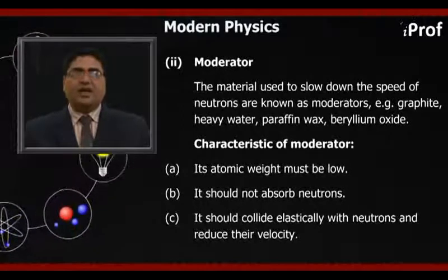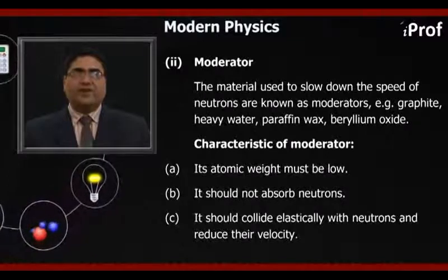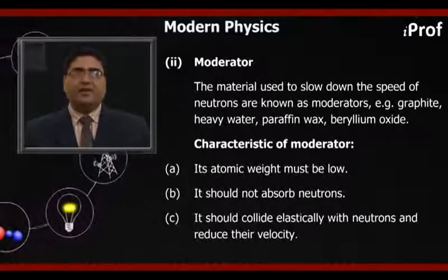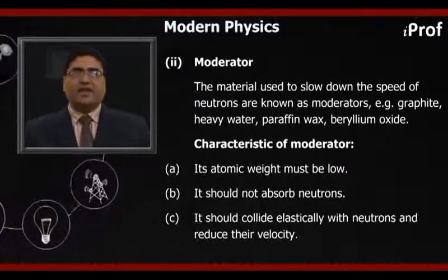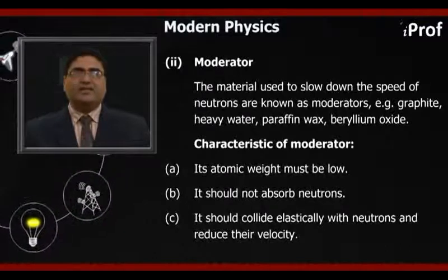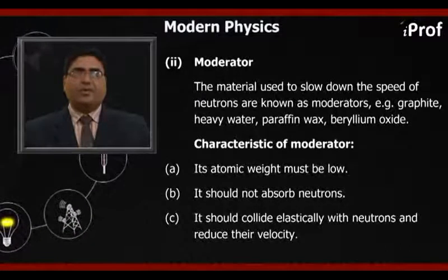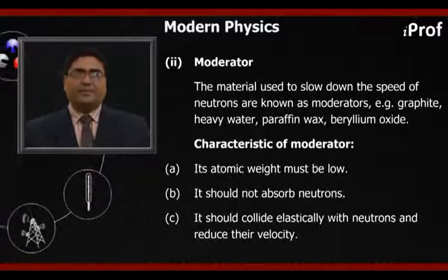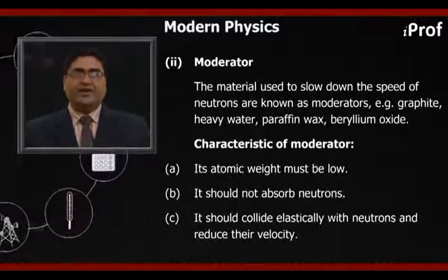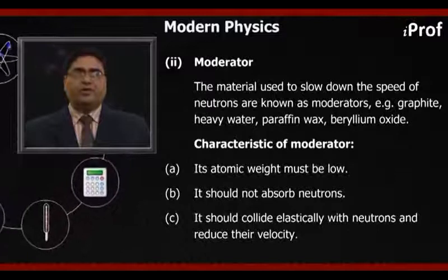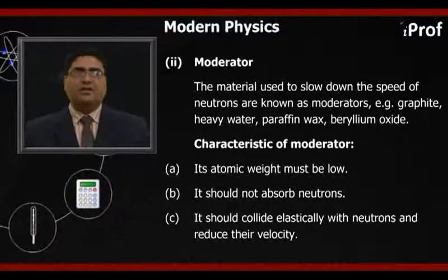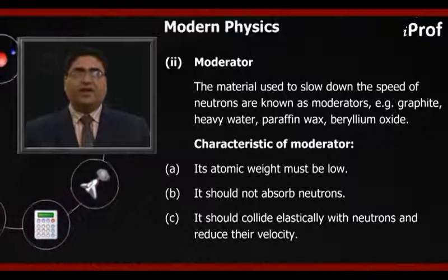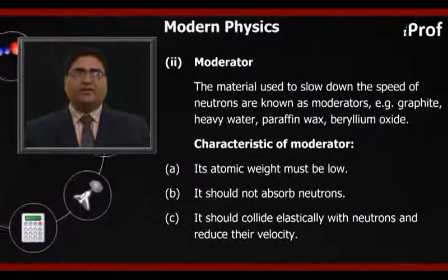Examples of moderators include graphite, heavy water, paraffin wax, beryllium oxide, etc. Characteristics of a moderator: first, its atomic weight must be low; second, it should not absorb neutrons; third, it should collide elastically with neutrons and reduce their velocity.